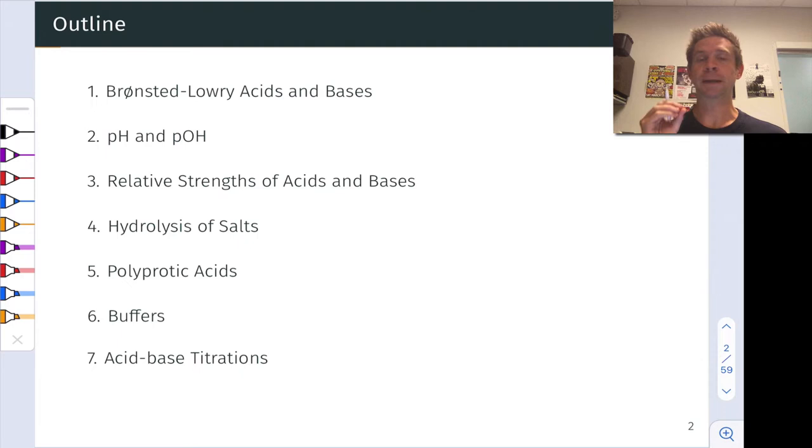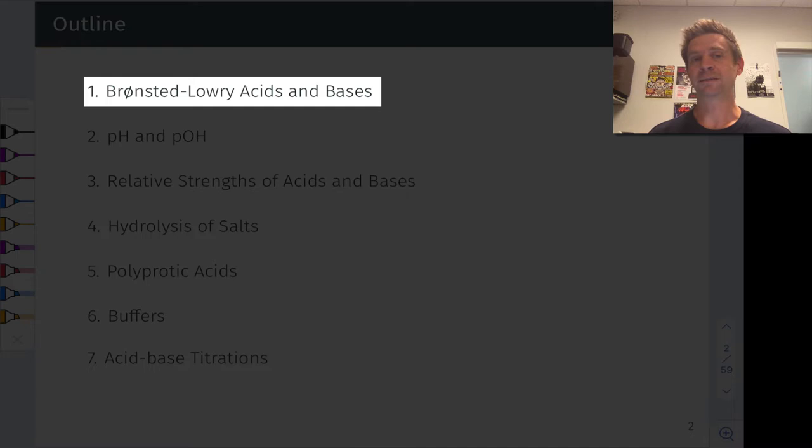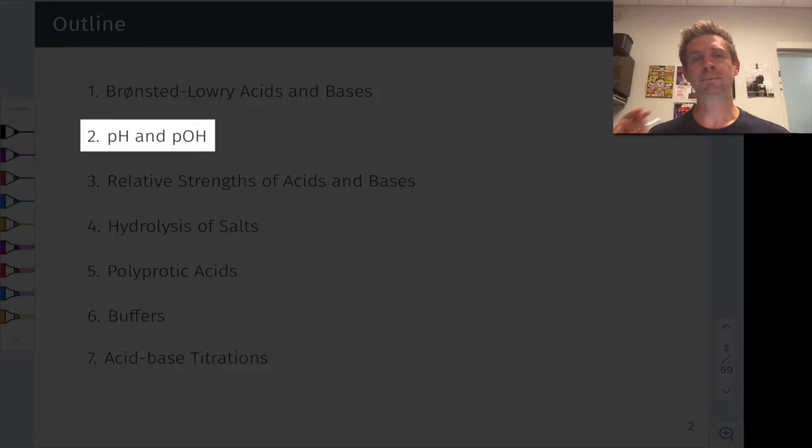In the first section, we'll introduce the Bronsted-Lowry acid-base model, define what we mean by an acid and a base, a Bronsted acid and Bronsted base, and define the idea of a conjugate pair and explain why that's so important. We'll see conjugate pairs throughout the remainder of this unit after that first section. In section two, we'll define pH and pOH, which are really, at the end of the day, concentration measures. These are measures of the concentration of hydronium and hydroxide ions in aqueous solution, which are two of the most important ions for Bronsted-Lowry acids and bases in water.